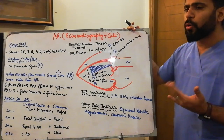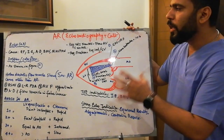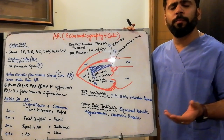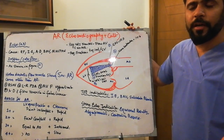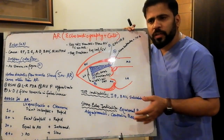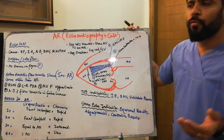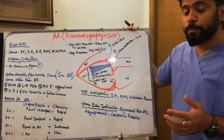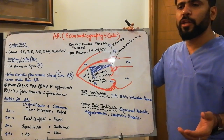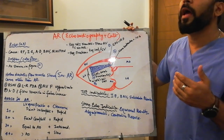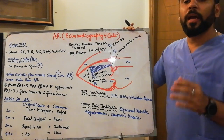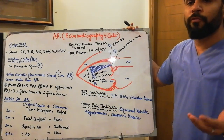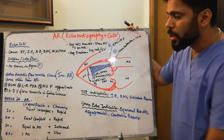Regarding angiographic findings: we usually do not perform angiography in AR patients nowadays because advanced modalities — including strain echo — can detect very early forms of AR and assess LV function. However, if you have equivocal findings and cath is the only option, or if you are already performing an LV angiogram or aortogram for another reason, you should know the theoretical findings in AR cath.